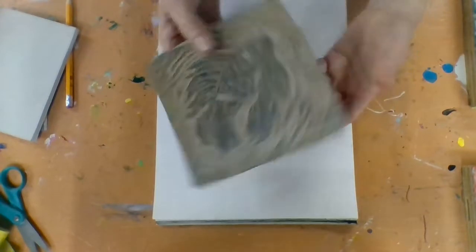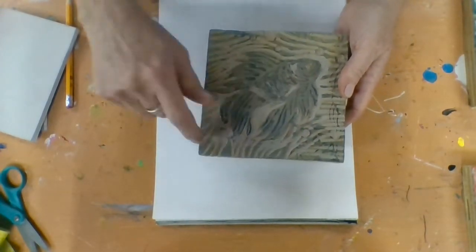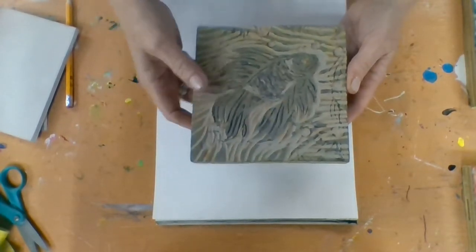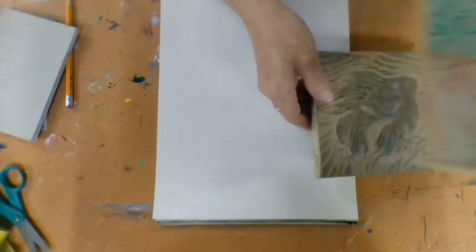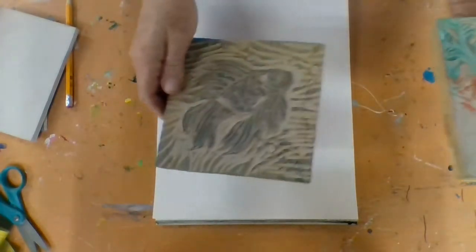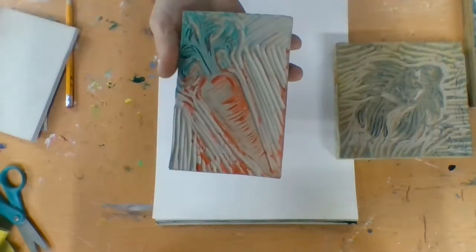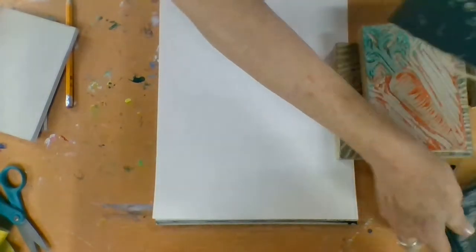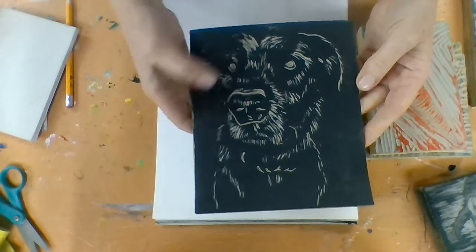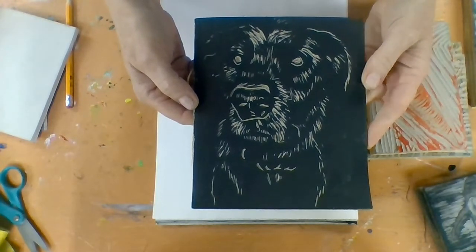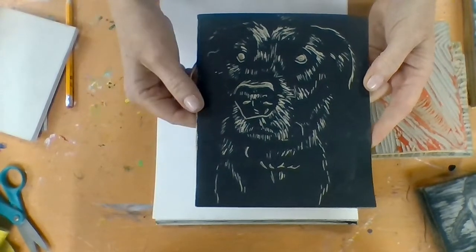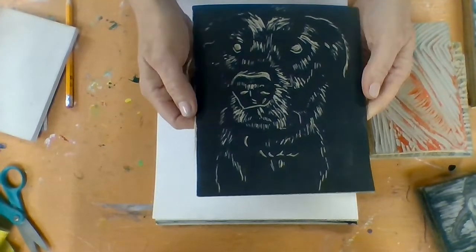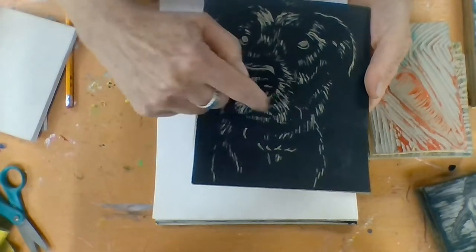So here are examples of linoleum plates. So the negative space has been cut and then what's raised, this is a relief print, is what prints. So here's an example of a fish that my friend Julie made. This is the plate, not the print from it. This was a carrot that I made. This is a penguin I made for my Christmas card.